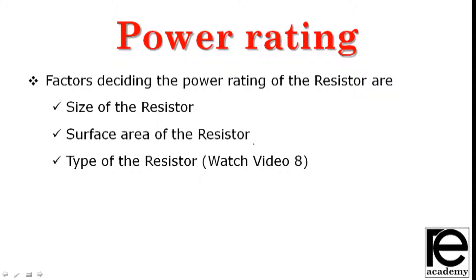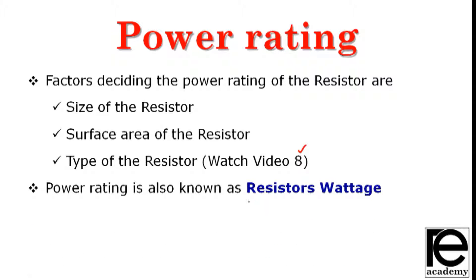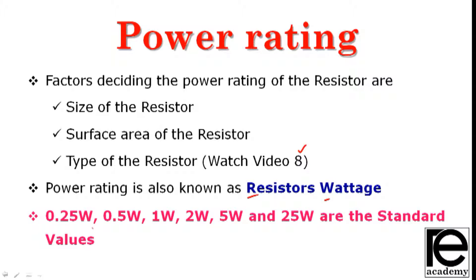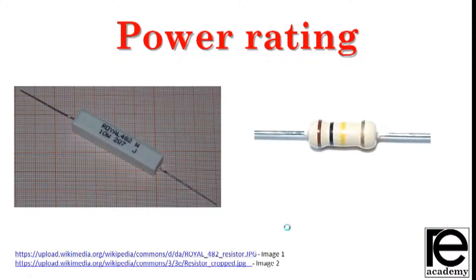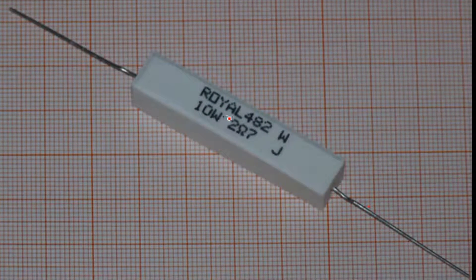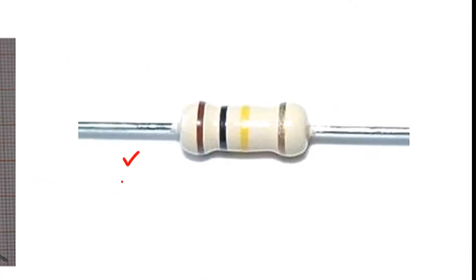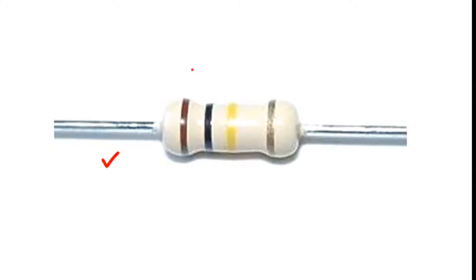The standard power rating values for resistors are: 0.25 watt, 0.5 watt, 1 watt, 2 watt, 5 watt, and 25 watt. A 10 watt resistor is also a standard value. Carbon film resistors typically have a wattage of 0.25 watt, also called quarter watt resistors.